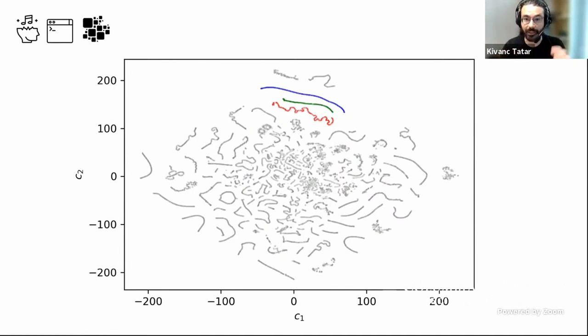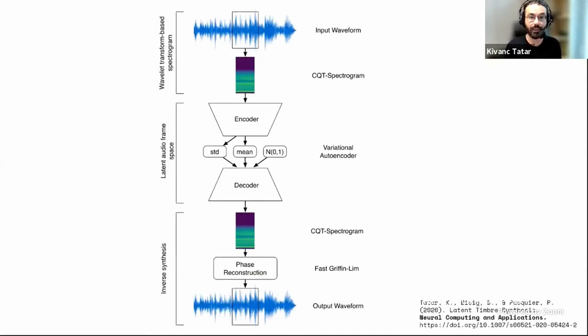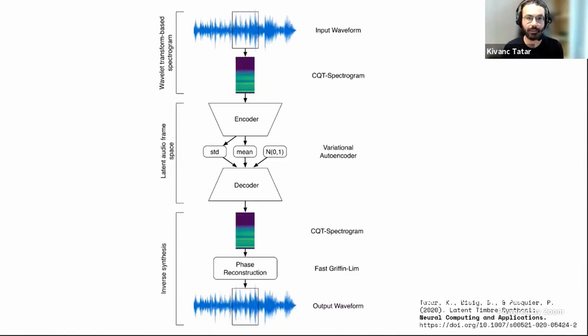That research is Latent Timbre Synthesis, published in 2020 — and the code for everything is open source on GitHub. Here I use a deep learning algorithm called Variational Autoencoders, trained on a particular type of spectrogram — a wavelet-based spectrogram called Constant-Q Transform spectrogram, which is very well known in music information retrieval and proven to be successful in different applications. The outputs were really interesting.